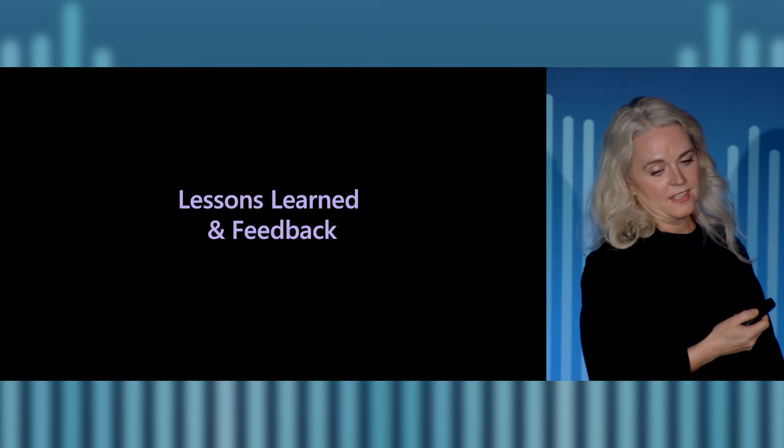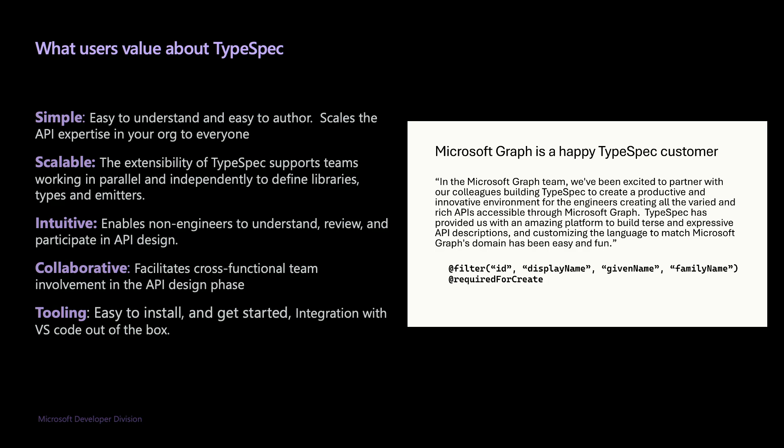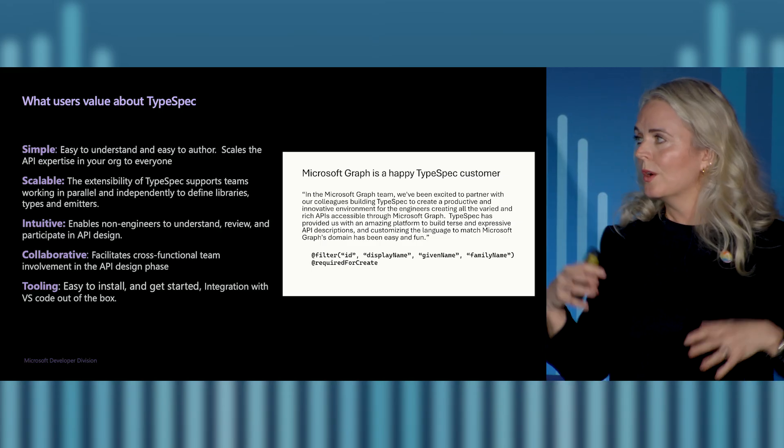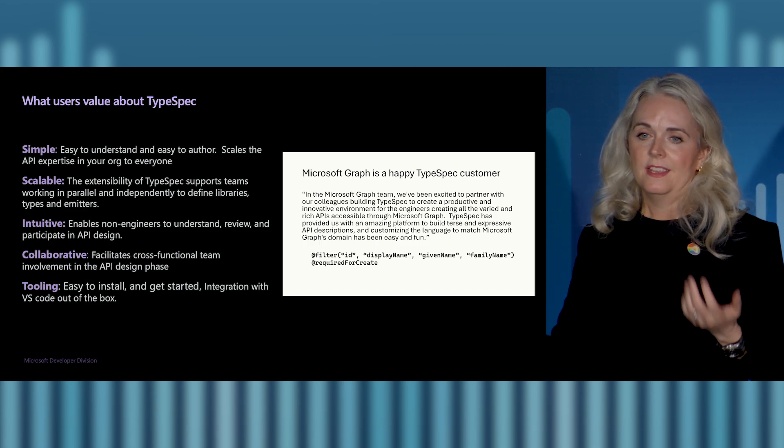So what are some of our lessons learned? These are things we've been learning as we've been using TypeSpec internally and with the open source community. Some of the feedback around what users are really valuing: it's simple, easy to understand and easy to author. The extensibility model of libraries and emitters really makes it scalable for teams to work independently on things that suit their organization and business. The intuitive and collaborative nature has been more surprising than we thought — it's really helping bring people into the API design process earlier, because product managers, documentation writers, non-engineers, and multiple engineering teams are able to review and understand the shape of the API together early in that process.